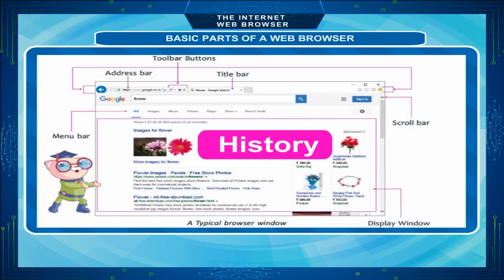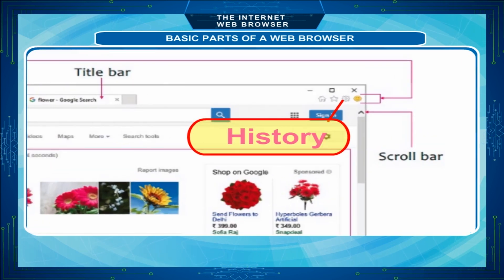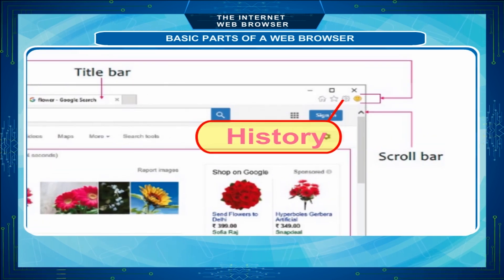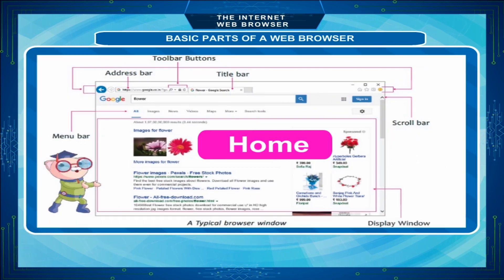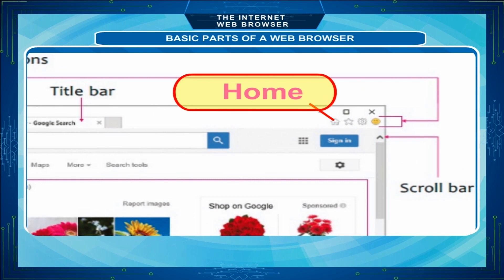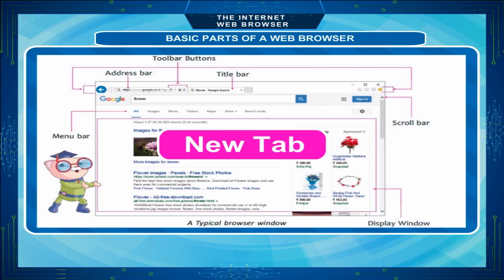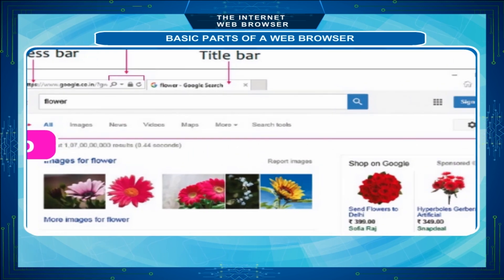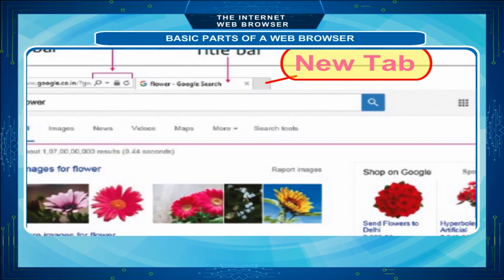History: Allows the user to find previously viewed URLs. Home: Takes the user to the URL specified as the home page. It is used to return the user to their default web page. New Tab: A new tab of a browser window refers to opening a new web page while browsing.